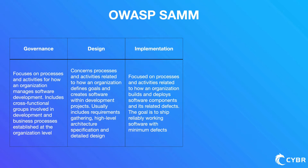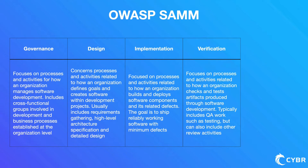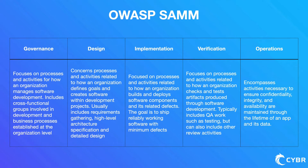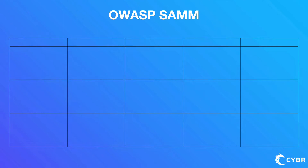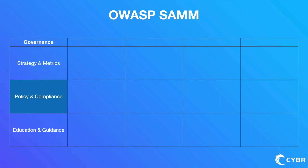Next, we have implementation, focused on processes related to how an organization builds and deploys software components and its related defects — the goal being to ship reliably working software with minimum defects. Then we have verification, focused on how the organization checks and tests artifacts produced through software development — this typically includes QA work such as testing, but can also include other review activities. Finally, we have operations, which encompasses activities necessary to ensure confidentiality, integrity, and availability are maintained through the lifetime of an application and all its data.